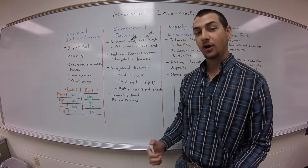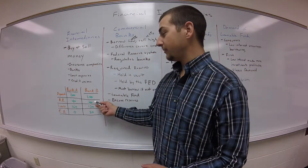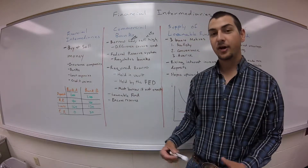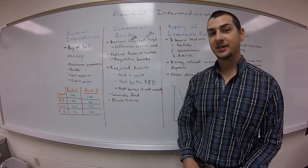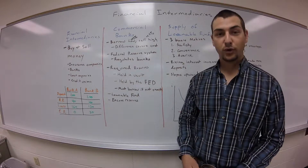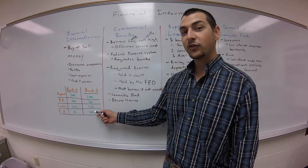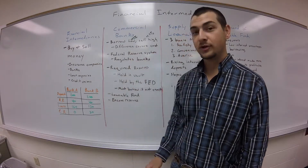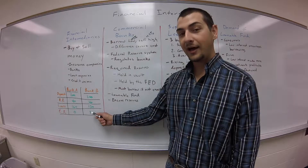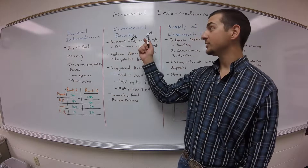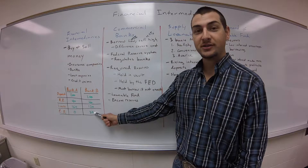Now let's look at Bank B. Same deal, but they have $160 of loanable funds and only loan out $130, leaving $30 in excess reserves. They are not fully utilizing their resources. Bank B is giving up money because they have $30 more they could loan out at a high interest rate. They're having to pay interest on this $30. They want to loan out as much as they possibly can — this is money just sitting there not doing them anything.